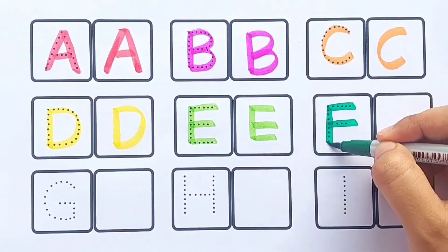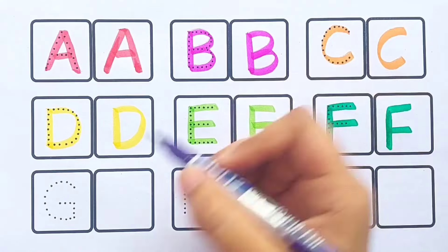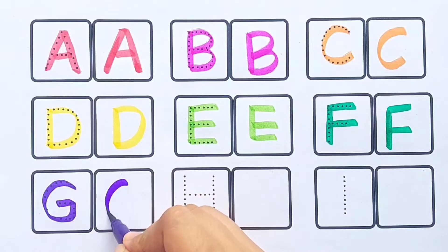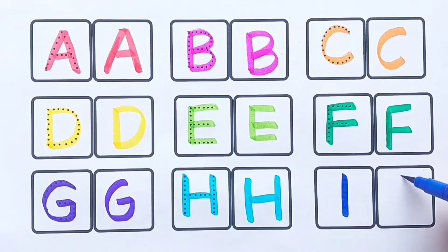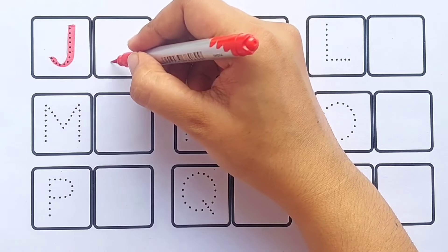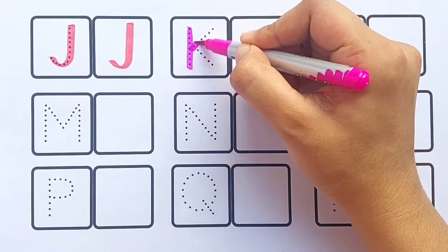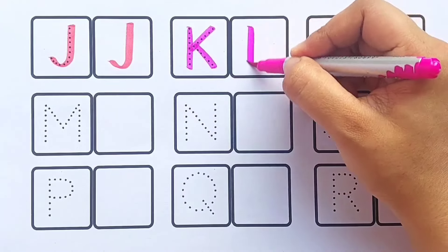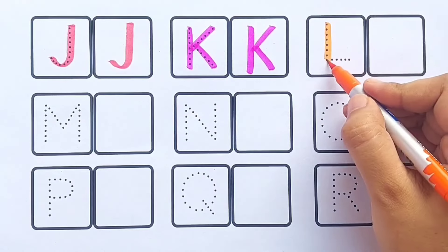Green color. F F for fish, purple color. G G for grapes, sky blue color. H H for hen, blue color. I I for igloo, red color. J J for joker, pink color. K K for kite, orange color. L L for lion.